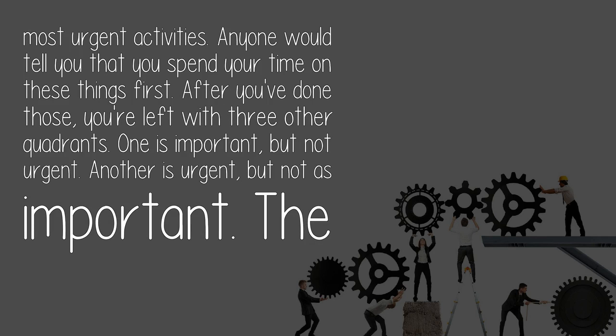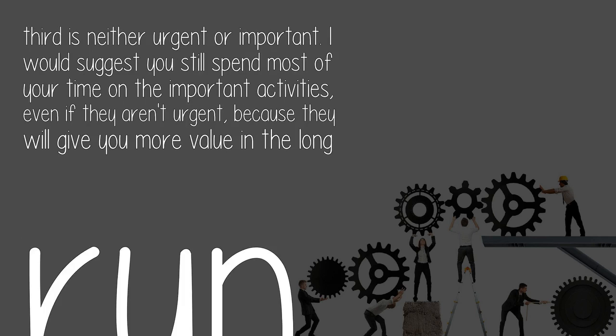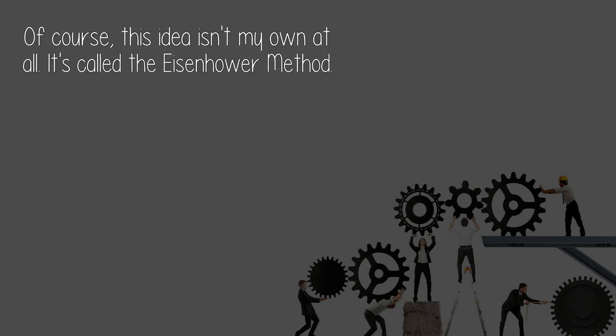This will give you four quadrants. One quadrant has your most important and most urgent activities — anyone would tell you to spend your time on these first. After those, you're left with three other quadrants: one is important but not urgent, another is urgent but not as important, and the third is neither urgent nor important. I would suggest spending most of your time on the important activities even if they aren't urgent, because they will give you more value in the long run. This idea is called the Eisenhower method.